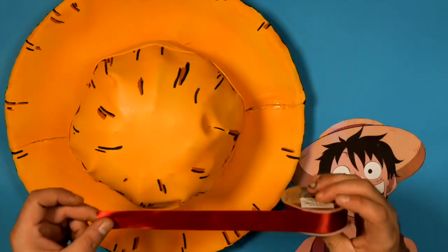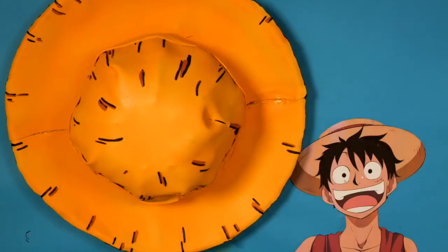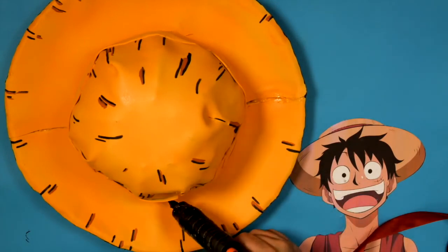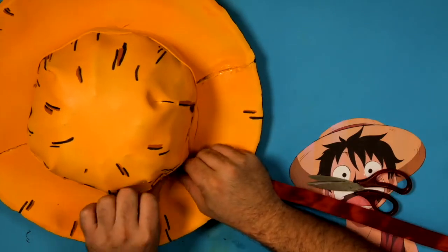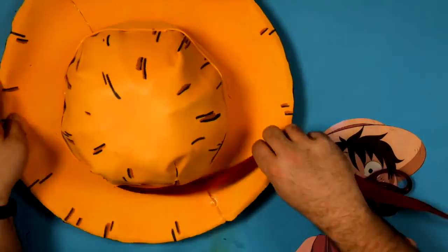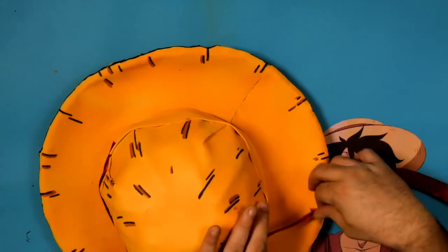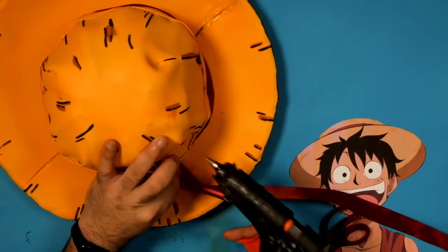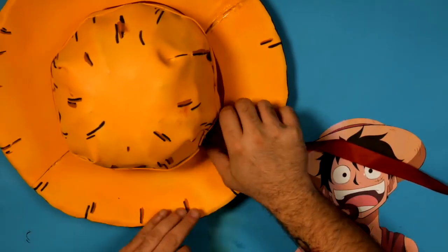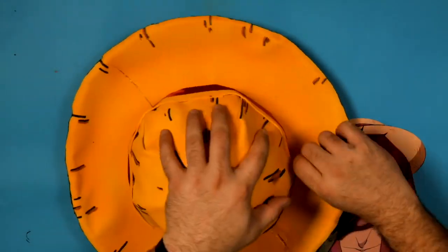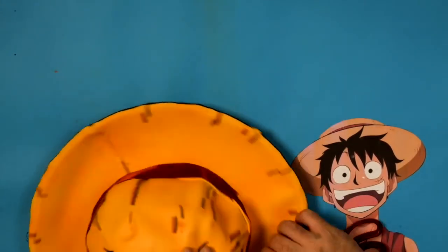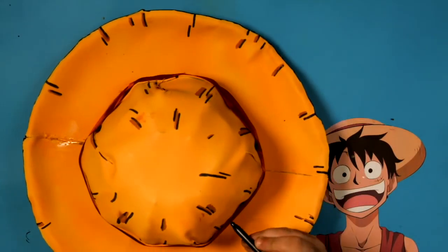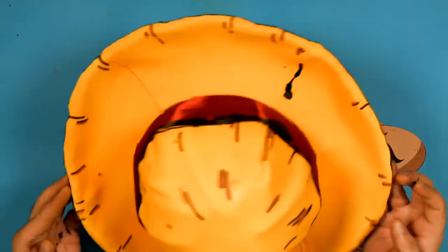Finally, we will place a red ribbon around the base of the crown. Glue one end with hot silicone and wrap the rest of the structure with the ribbon. Give it at least a couple of laps around and put a few more glue points along the way to secure it even more. Draw one more line on the red ribbon. And with this, we have finished our Luffy hat.